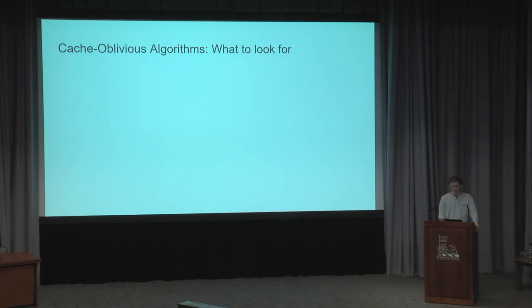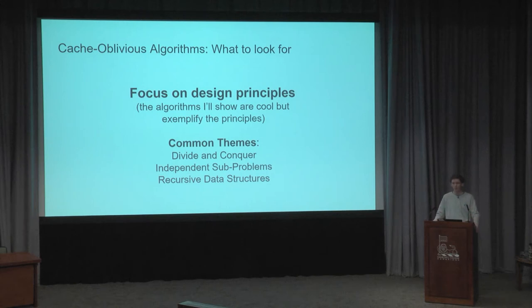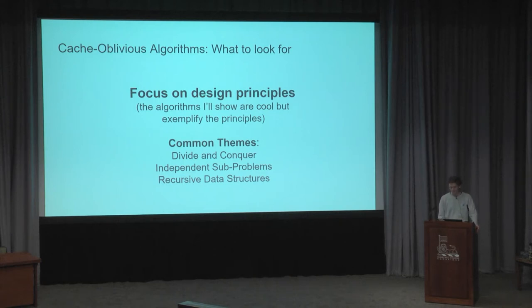Before we go into the cache-oblivious algorithms, it's important to keep in mind the design principles going into these. The algorithms I'm going to show exemplify the principles behind designing efficient or optimal cache-oblivious algorithms. The common themes are divide and conquer — splitting into independent sub-problems — and recursive data structures that match the logical structure of the algorithm.